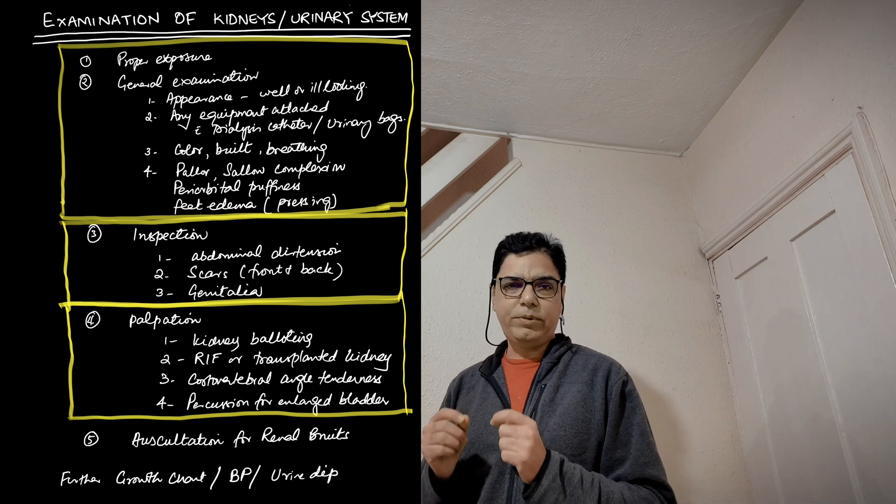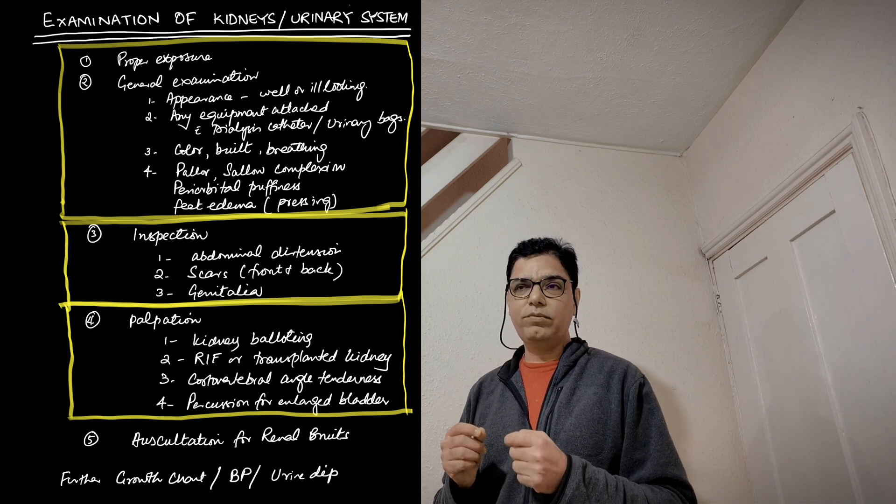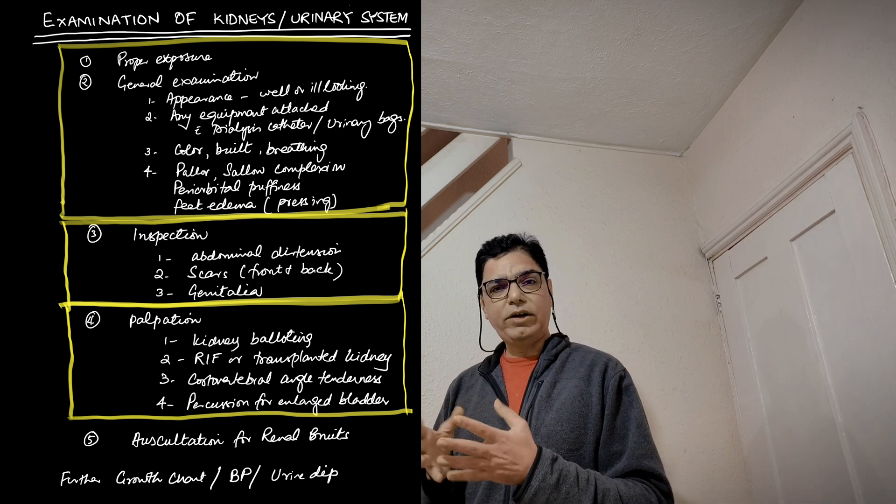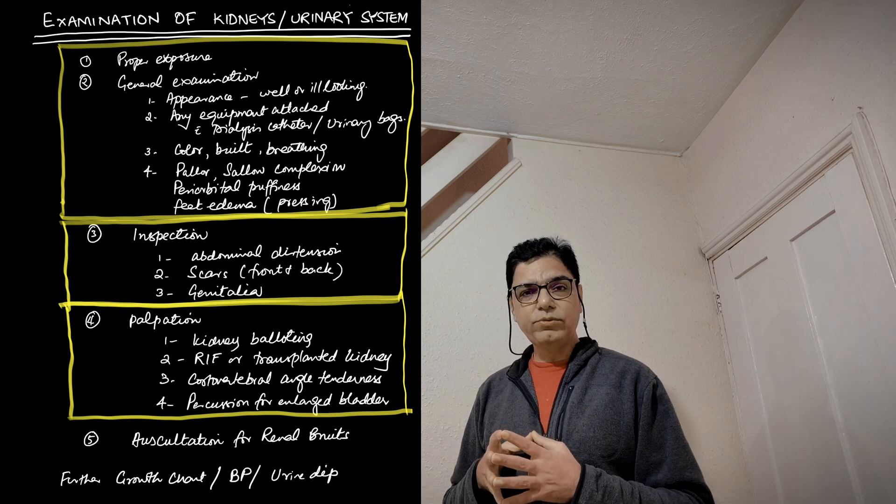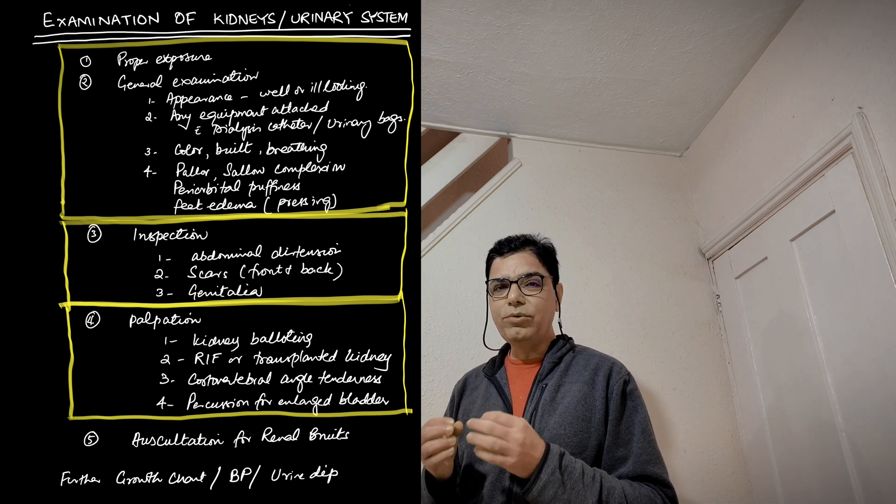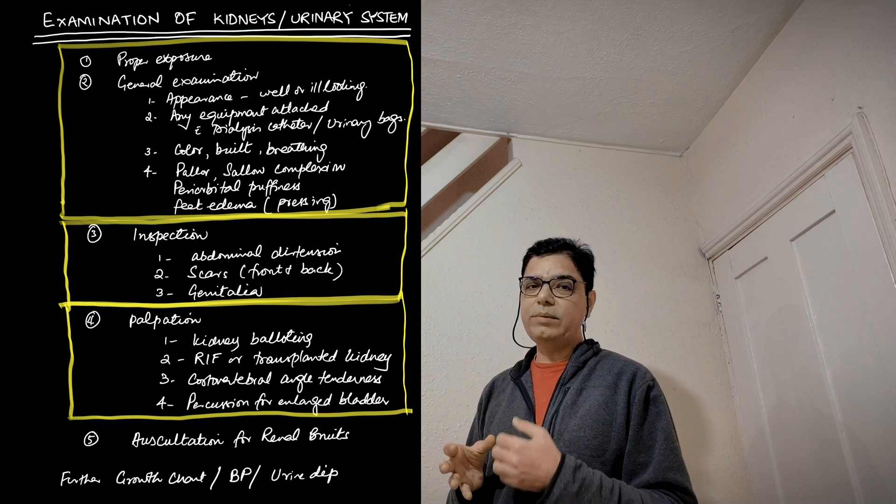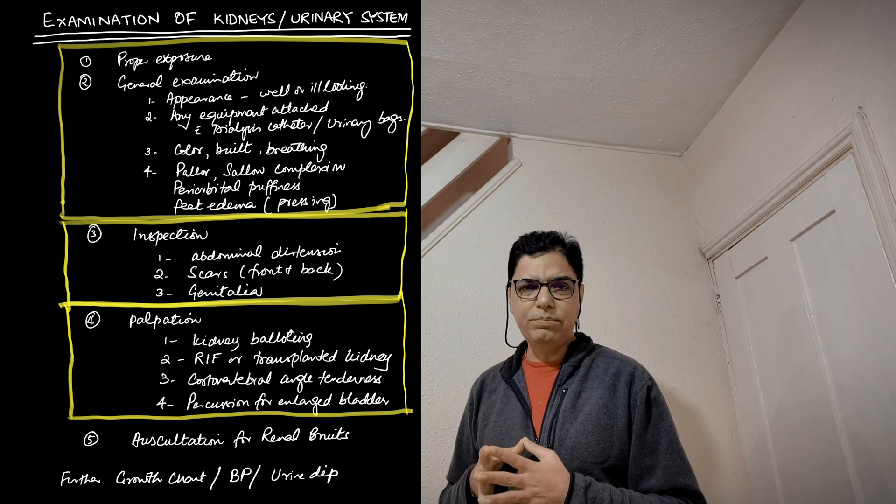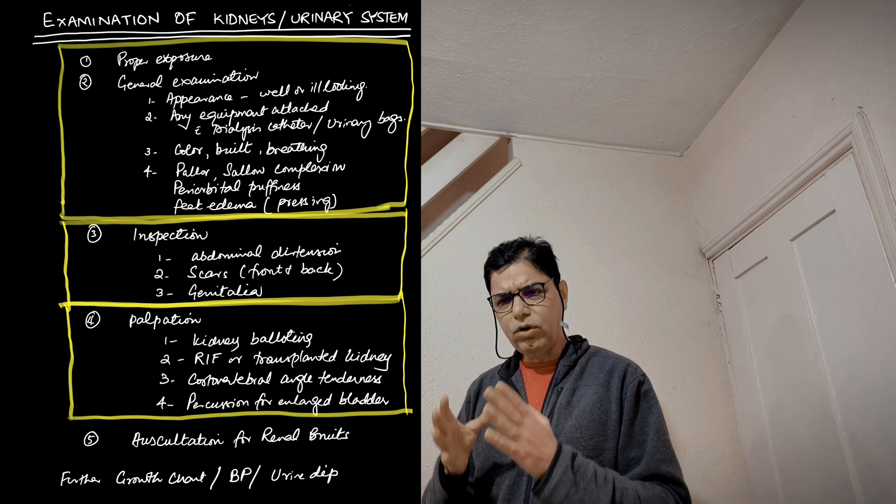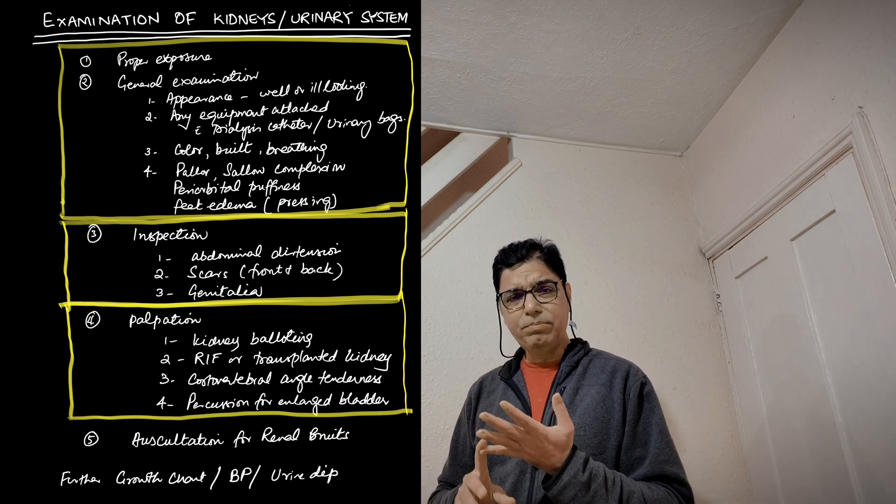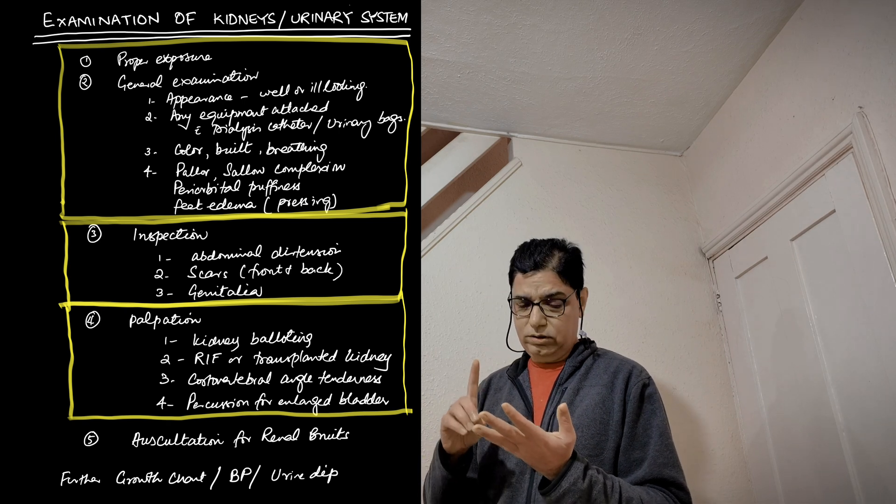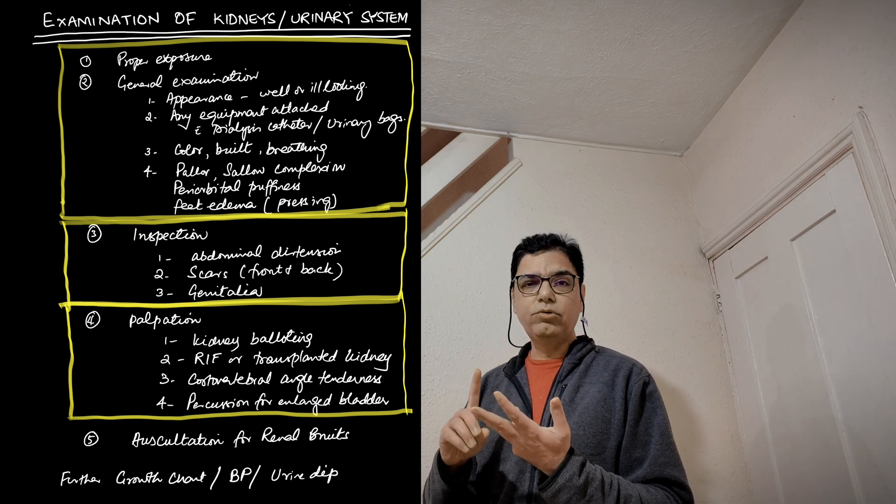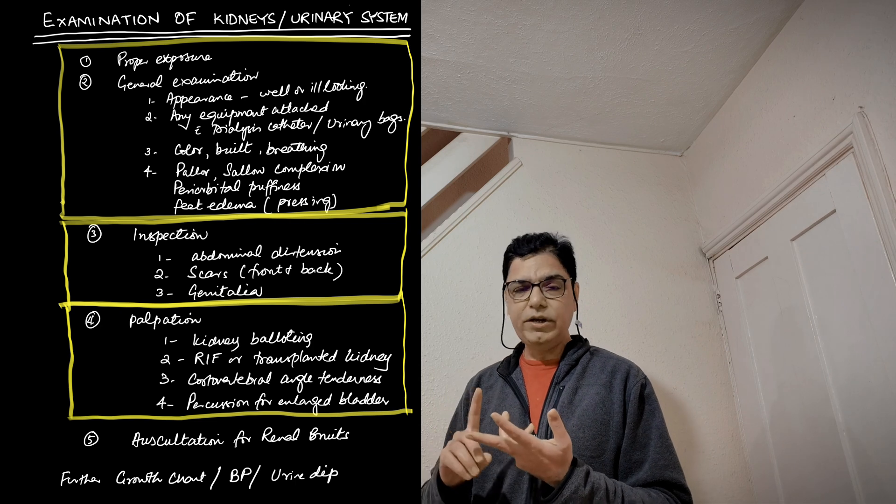Number two, you would also like to do the blood pressure monitor. Blood pressure is an important part of your examination. I would like to do the blood pressure reading as well. And the third thing is to do a urine dip. Specifically in urine dip, you want to see if there is any proteinuria or hematuria, which might be hallmarks of kidney problem. So remember, you always complete your examination by mentioning that you would like to do growth charting, number two blood pressure reading, and number three urine dip.